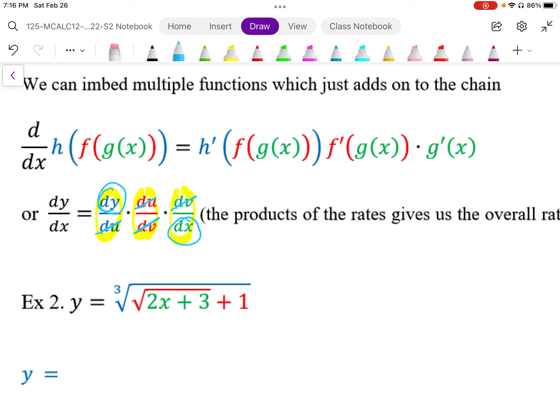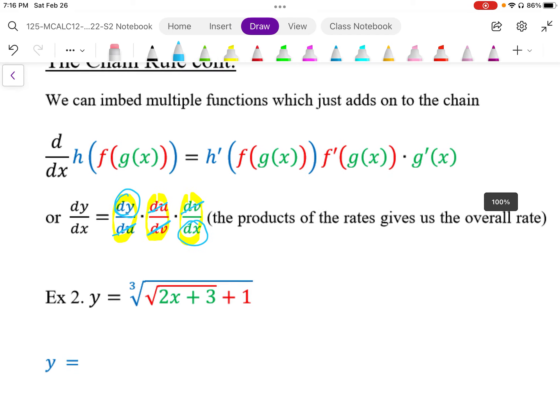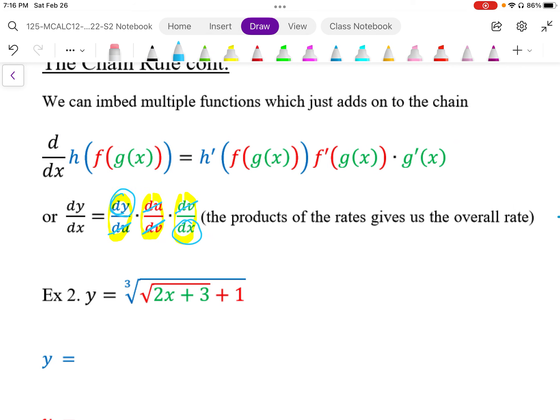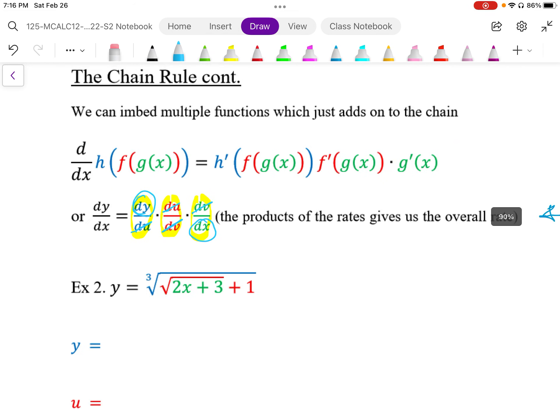When we multiply these rates, the products of rates give us the overall rate of dy by dx. It's algebraically consistent, but not only that, it works just like we do in rate analysis in science. It's the exact same thing.